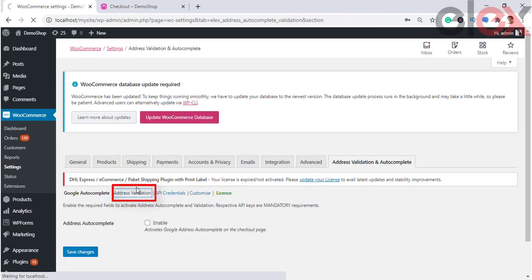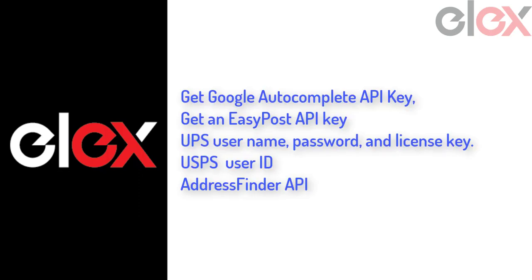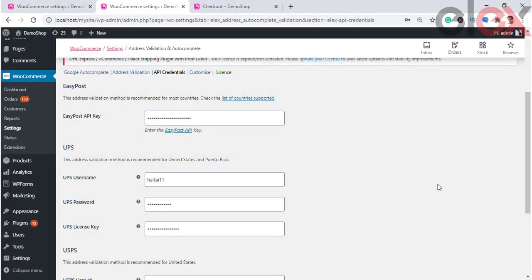The plugin has two core functionalities: the first is the Google Address Autocomplete feature, and the second is the Address Validation feature. Before you get started, you need to obtain the following API keys: a Google Autocomplete API key, an EasyPost API key, UPS username, password and license key, USPS user ID, and Address Finder API key.